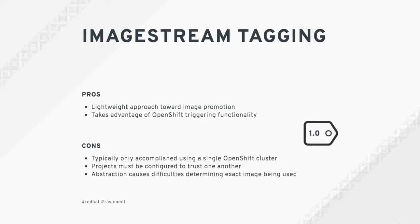Pros and cons of image stream tagging: it's a very lightweight approach that takes advantage of OpenShift's built-in functionality. The cons are that it typically only works within a single cluster, projects must be configured to trust one another, and there is a level of abstraction because it uses the underlying SHA hash rather than the tag — so a 1.0 tag could point to a different SHA after a security patch than it did before.